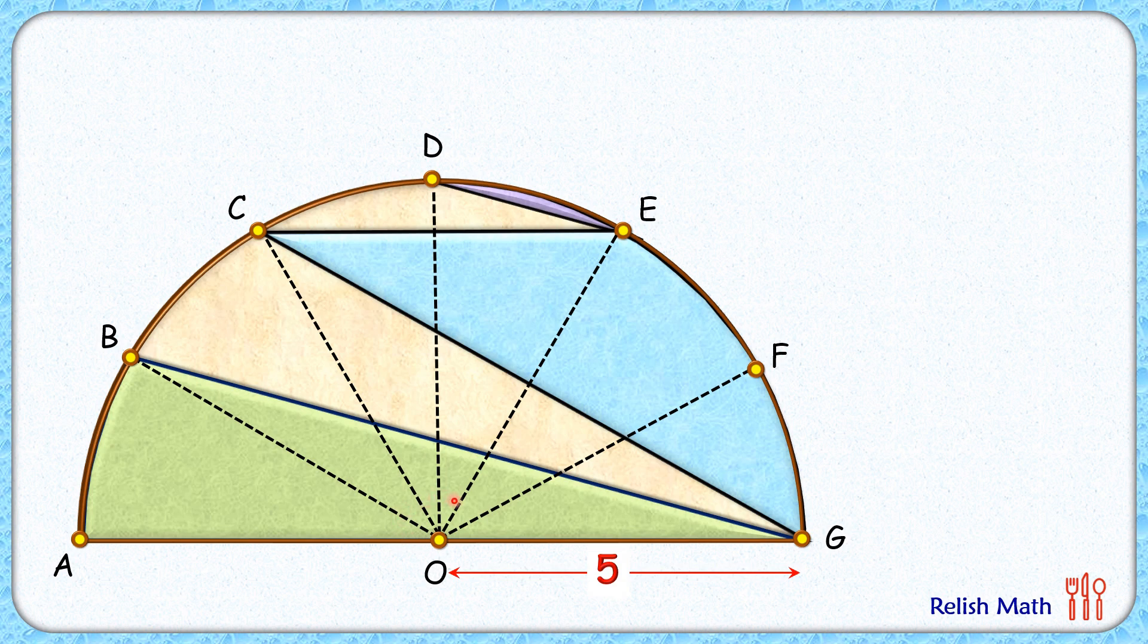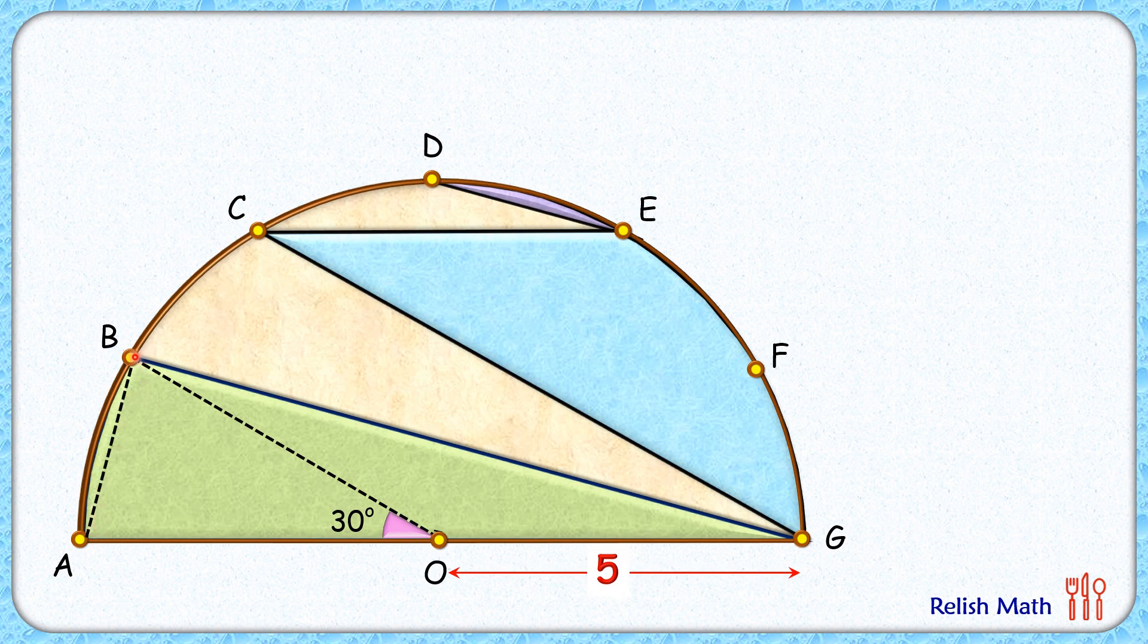Thus, this angle here is nothing but 30 degrees. Now let's join AB. In this triangle BAG, O is the midpoint and thus BO is the median. We know that in a triangle, the median divides it into two equal areas.